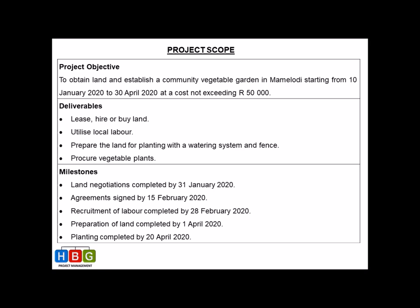Now we move on to the project deliverables. Deliverables are basically the elements that must be delivered by the project to make sure that the project objective is attained at the end of the day. The deliverables for this project are: lease, hire, or buy the land; utilize local labor; prepare the land for planting with a watering system and a fence; and procure vegetable plants. I derived these by breaking the main project objective into manageable pieces — covering land, labor, preparation, and procurement — which you will later plan in much more detail.